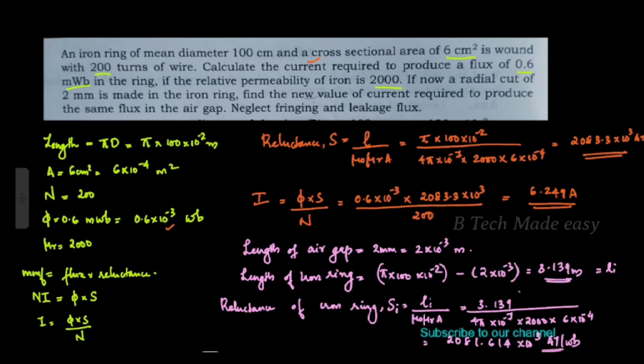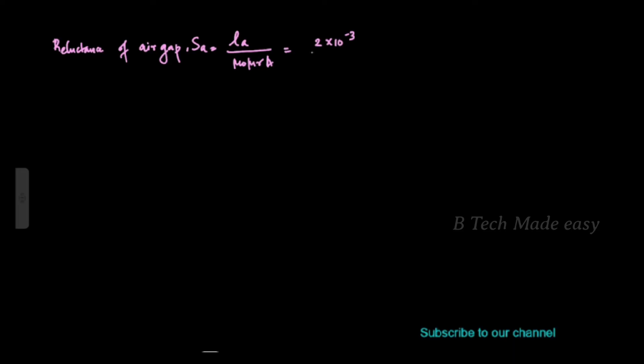We are going to calculate the reluctance of the air gap. Reluctance of the air gap SA equals LA divided by μ0 μr into A. LA is 2 into 10 raise to minus 3, divided by μ0 which is 4π into 10 raise to minus 7. Since it is an air gap, μr is 1, and A is 6 into 10 raise to minus 4. Solving this gives 2652.58 into 10 raise to 3 ampere turns per Weber.